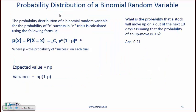We are still on discrete distributions and here we'll talk about the binomial random variable. This probability is the probability distribution of a binomial random variable for the probability of X successes in N trials and it is calculated using this formula.